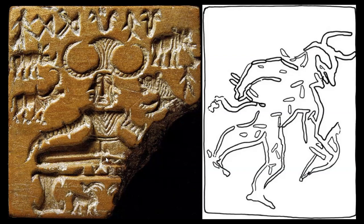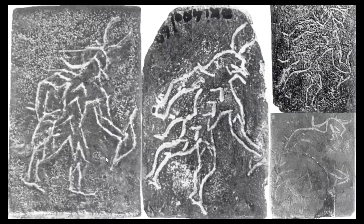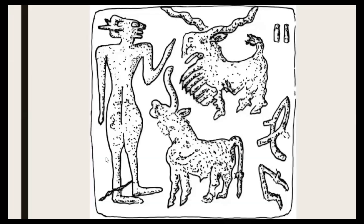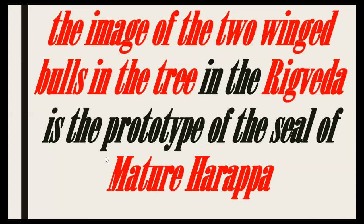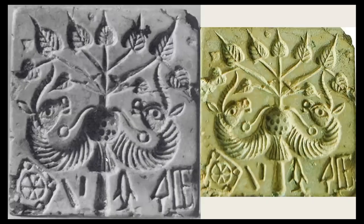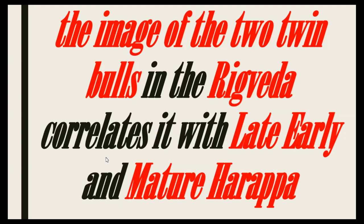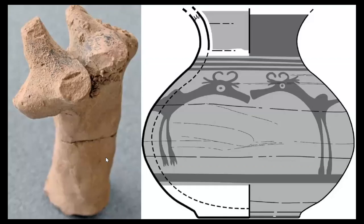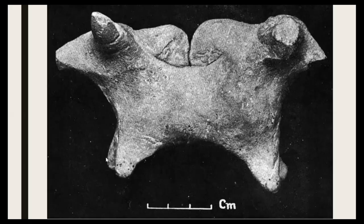Pashupati is a name of Agni and his aspects such as Poshan, and Indra — one of Agni's aspects — is also described as a great archer, the same as Rudra and some other gods. These are Mature Harappan copper plates with the depiction of the archer god, and another illustration of the Mature Harappan master of animals. The image of two winged bulls in a tree in the Rig Veda, most probably the Ashvins, is the prototype of a Mature Harappan seal. The image of twin bulls in the Rig Veda in general correlates it with late early and Mature Harappa, where we find depictions of inseparable twin bulls from Mature Harappa and Balochistan.